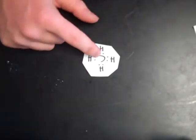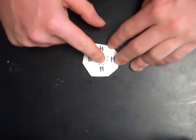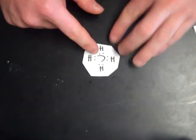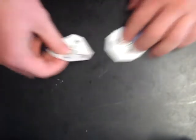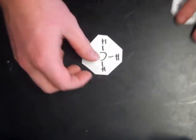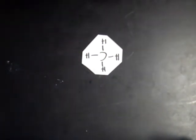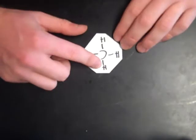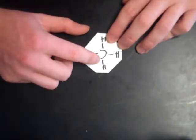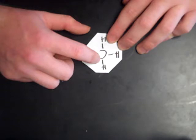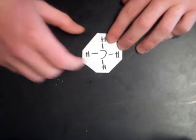Carbon shares two electrons with each hydrogen atom. Because those are two shared electrons, we can also write this as CH4 with a line between each atom representing a bond. That's what we have to do for step number two.